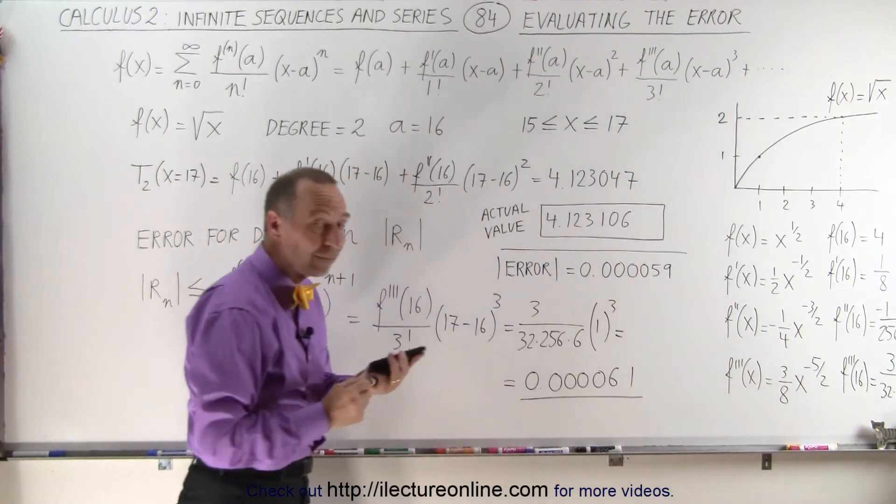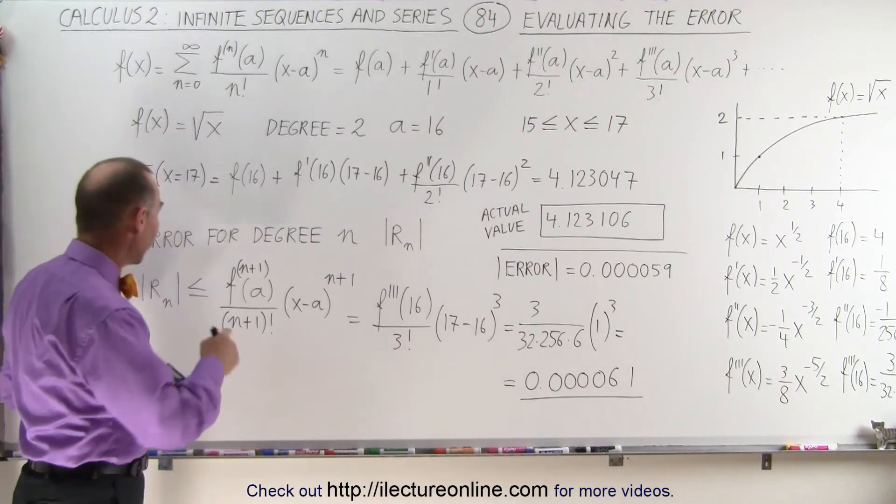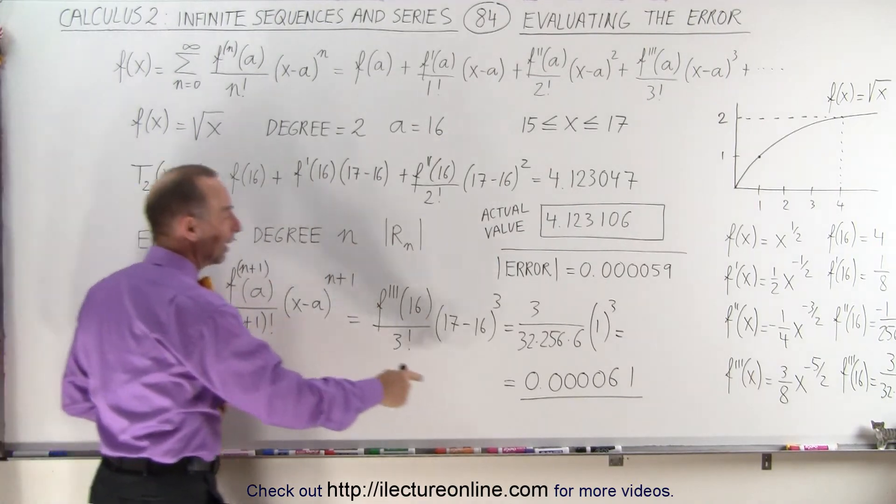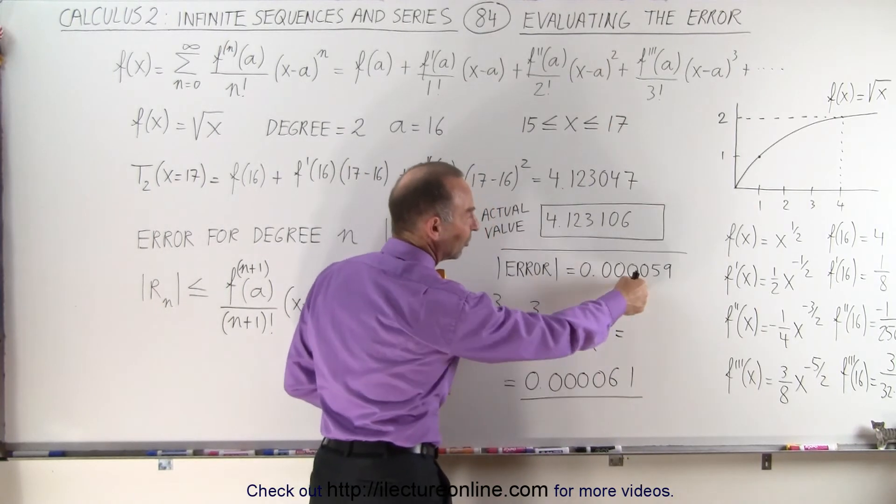Notice, that's the estimated error, or that's the value of the next term, and we know that our error in the expansion is going to be less than or equal to that, and when we compare what we got to what that number is here, you see that, yes indeed, it is slightly less.